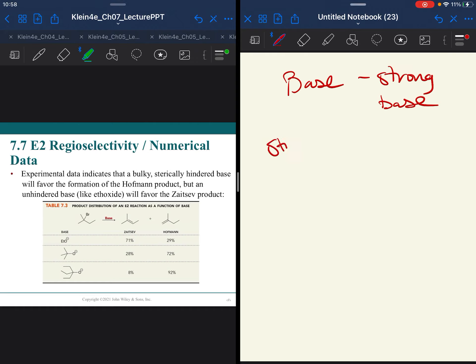Most of your strong bases, strong bases that will yield Zaitsev products, and that's most of them that we're going to deal with, are going to be smaller. The hydroxide, the small alkoxide, so methoxide, ethoxide, these are going to give Zaitsev products.